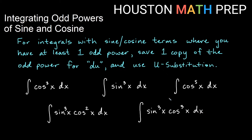In all of these, the idea will be to save one copy of whatever you have an odd power of. You're going to keep that for du. You're going to turn everything else into u and do a u-substitution.